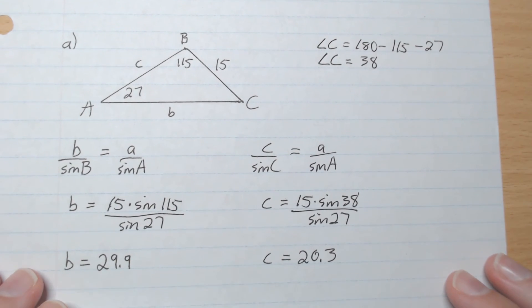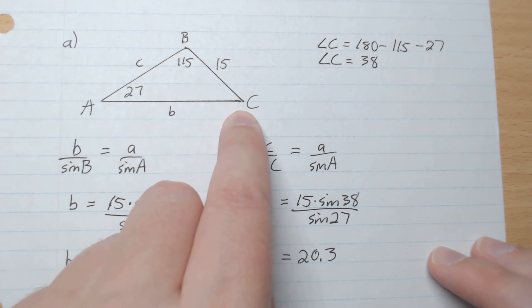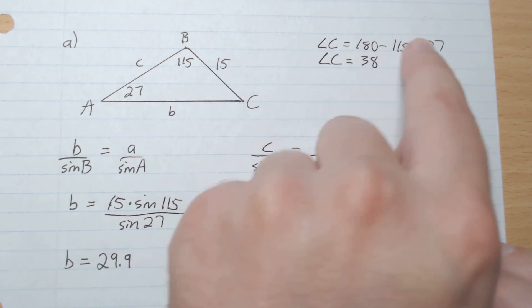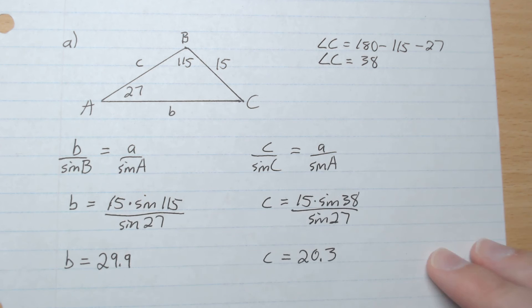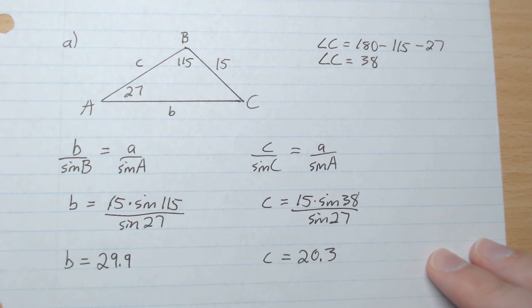We're back. So here we have angle A and angle B but not angle C. So 180 minus 115 minus 27 gives 38. We have angle A and side a. We have angle B but not side b. So we're going to isolate b, multiplying sine B to both sides. And this gives 29.9.